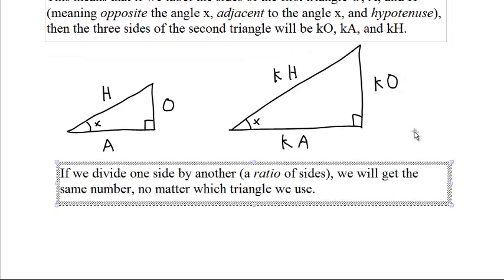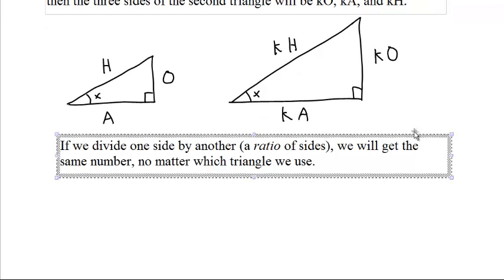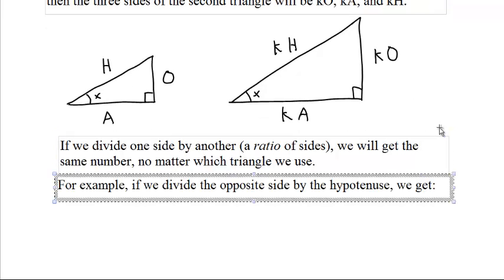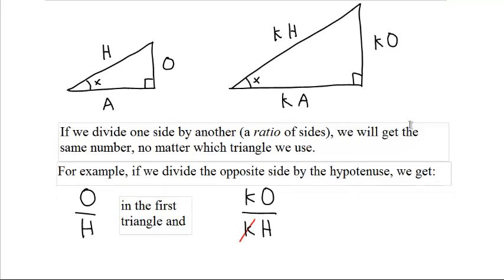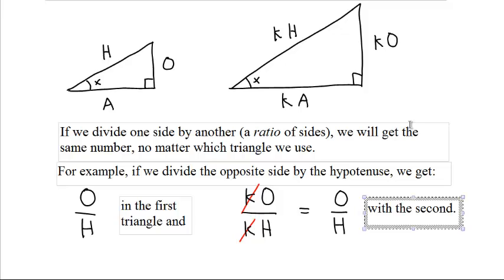What does that mean? That means that if we divide one side by another, we will get the same ratio, the same number, for either the big triangle or the little triangle. For example, if we divide the opposite side by the hypotenuse, for the little triangle we get O over H. However, on the big triangle, we get kO divided by kH, but the k's cancel out, leaving behind just O over H.